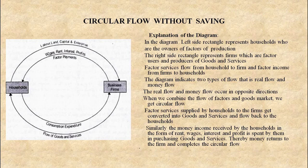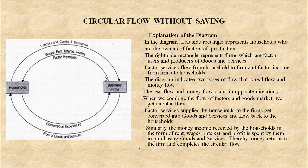What labor gets is wages, what land gets is rent, what capital gets is interest, and what enterprise gets is profit. So factor services flow from households to firms and factor income flows from firms to households. The diagram indicates two types of flow: real flow and money flow. Real flow and money flow occur in the opposite direction. When we combine the flow of factors and goods market, we get the circular flow.